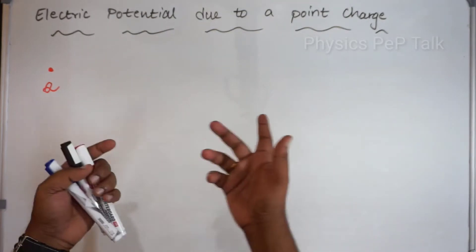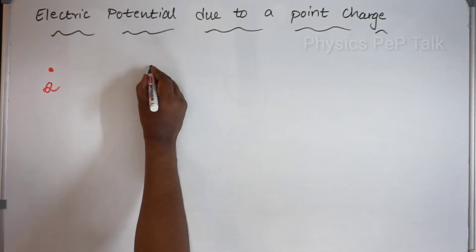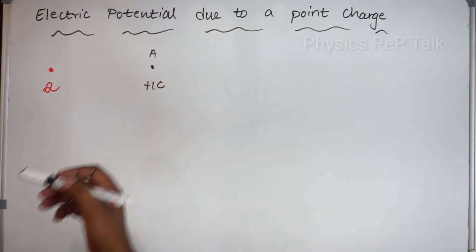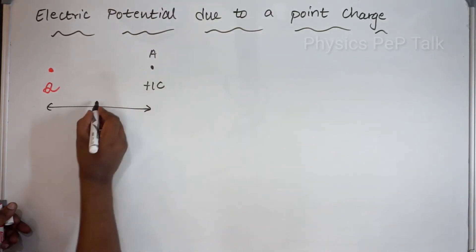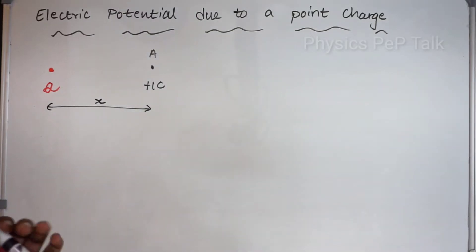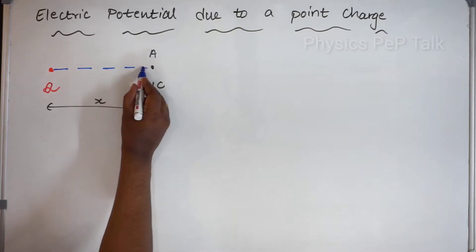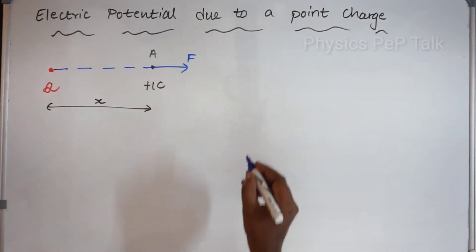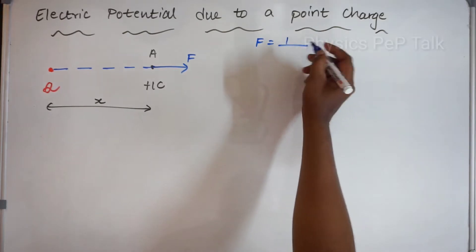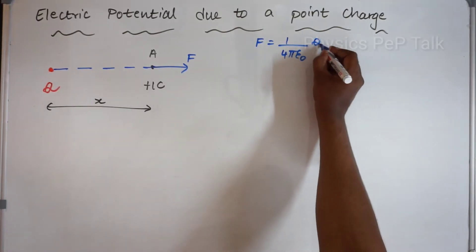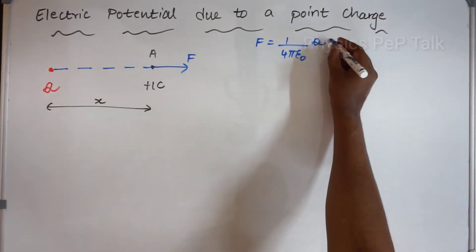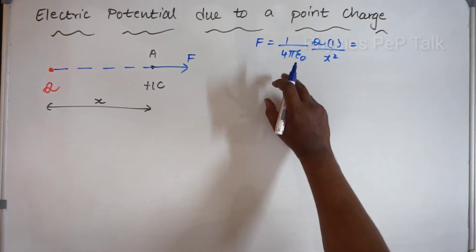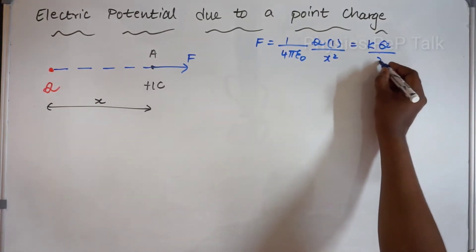If I determine the electric field, I have to place a test charge. I will consider a point A where I will place a 1 coulomb test charge at a distance of x from this charge. This 1 coulomb charge will experience a force in this direction, and the equation of F is given by Coulomb's force: F = (1/4πε₀) × Q × 1 / x², which is nothing but Kq/x².